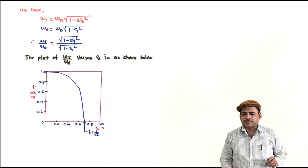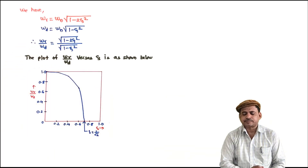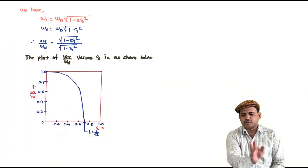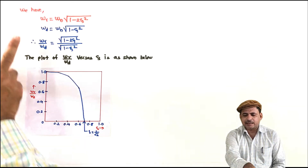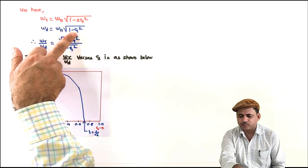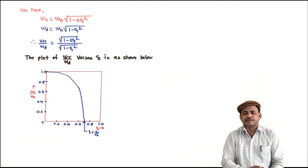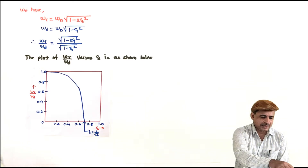From the graph, when zeta is equal to 0, omega r by omega d becomes 1. As zeta increases, this ratio decreases, meaning both omega r and omega d decrease as zeta increases. Though both are decreasing, omega r is decreasing at a faster rate — that is our first conclusion.